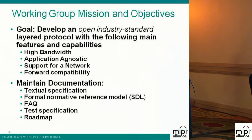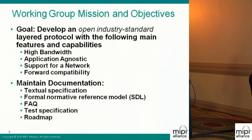Another important task for the working group is to maintain the documentation. We do the specification in two ways: we have a textual specification, which is the usual document people tend to have at the table, but in addition we also have a formal normative reference model described in SDL language. Both documents are the specification of UniPro. Of course, we maintain frequently asked questions. We also maintain a test specification, which is a very important document describing what test items are required for conformance testing. And of course we also maintain a roadmap about which UniPro feature is going to come when and by which version.